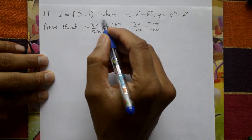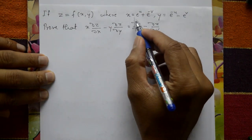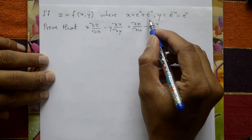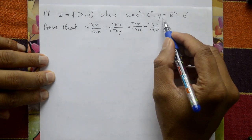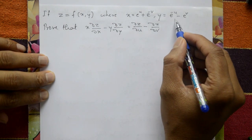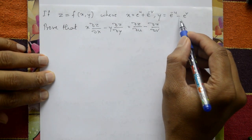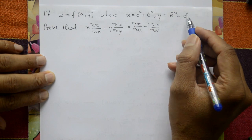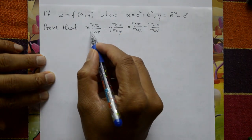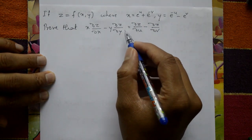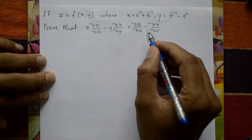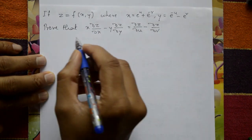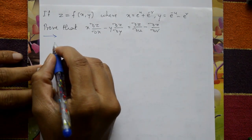If Z is equal to f of xy, where x is equal to e raised to u plus e raised to minus v, and y is equal to e raised to minus u minus e raised to v, show that x dou z by dou x minus y dou z by dou y equals dou z by dou u minus dou z by dou v.